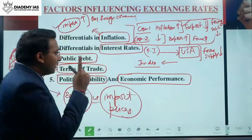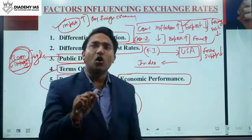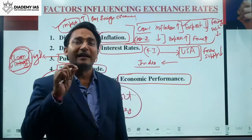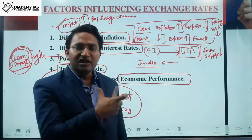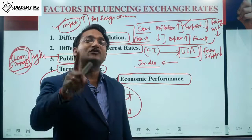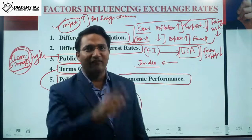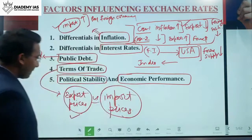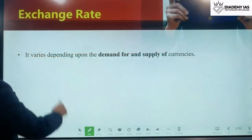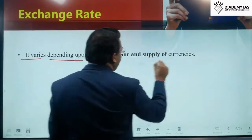An increase in the external value of a currency is called appreciation, and a decrease in the external value is called depreciation. These demand and supply forces operate in the case of a flexible exchange rate market, also known as a floating exchange rate market.